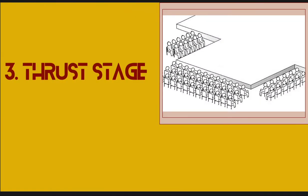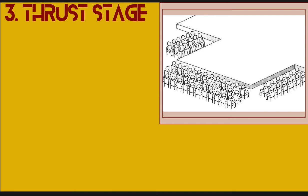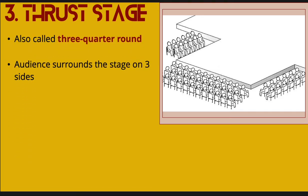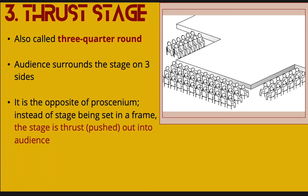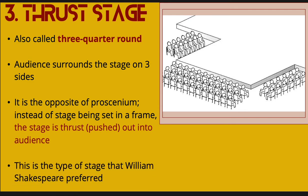The next type is the thrust stage. Interestingly, the name of each stage tells you quite a bit about its design. The thrust stage is also called three-quarter round because the audience surrounds the stage on three sides. It is basically the opposite of proscenium — instead of the stage being set back from the audience, it is thrust, pushed out into the audience. This is actually the type of stage that William Shakespeare preferred, because the audience feels very involved. It feels quite intimate even if it's a big space, and the audience feels much more part of the action than with a proscenium stage.